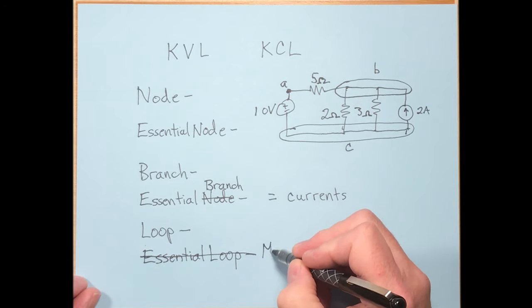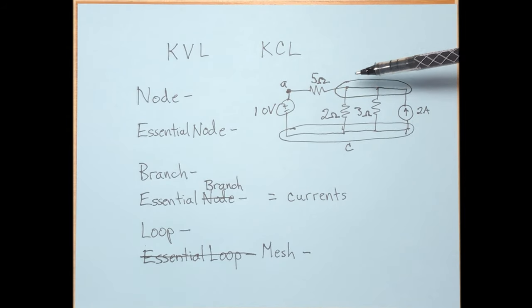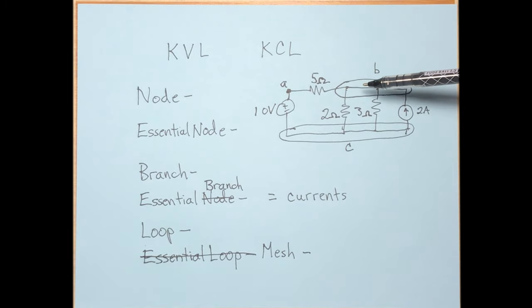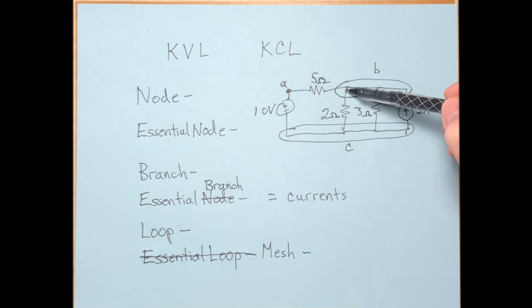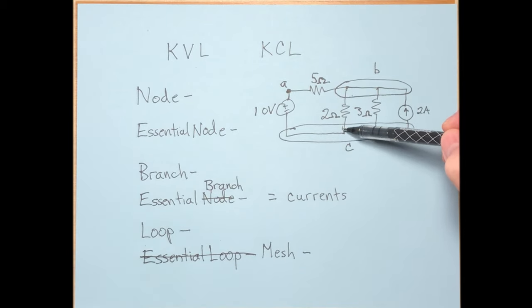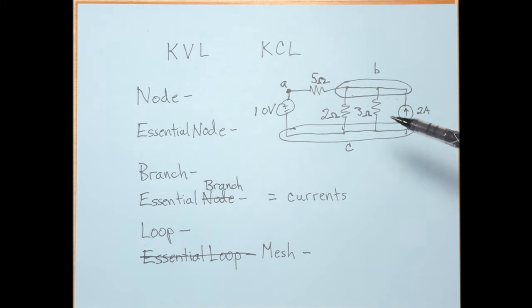An essential loop is actually called a mesh. A mesh is a loop that does not enclose other loops. There are six loops possible in this circuit, but only three meshes. A loop that encloses these two inner loops is not a mesh because it contains other loops within it. So a mesh is specifically a loop that does not enclose other loops.